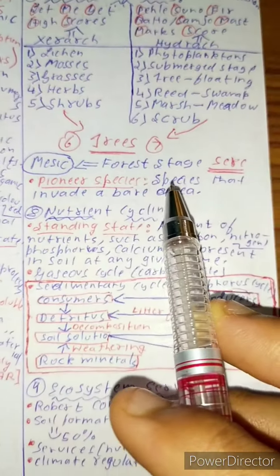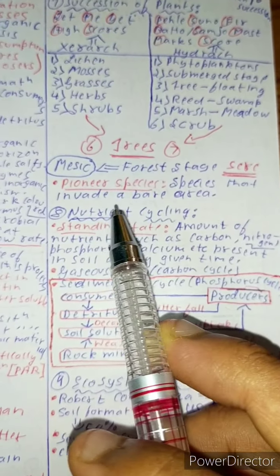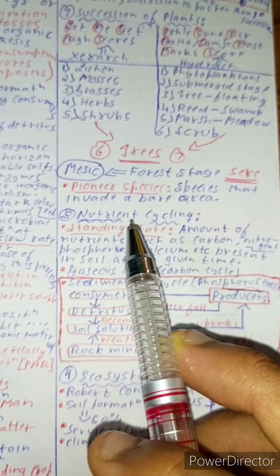Now let us discuss about pioneer species. Pioneer species are the species that invade a bare land or an area.